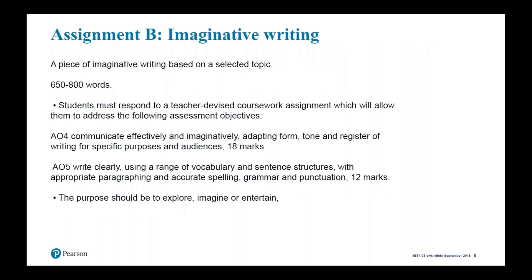Let's look at Assignment B — imaginative writing. This is a piece of writing, again 650 to 800 words. Students must respond to a teacher-devised coursework assignment which will allow them to address AO4 and AO5. AO4 is adapting form, tone and register for a specific purpose, and AO5 is writing accurately and with variety.